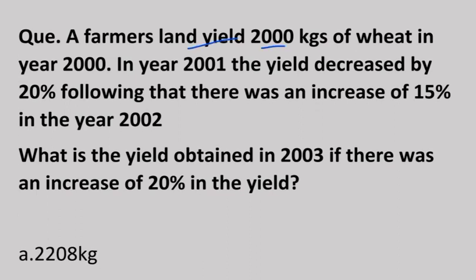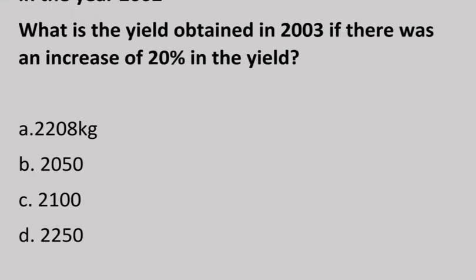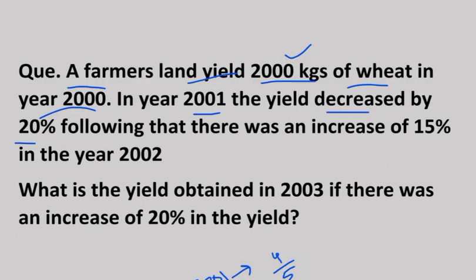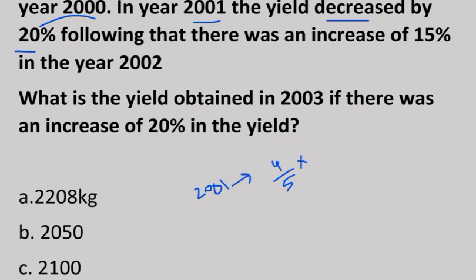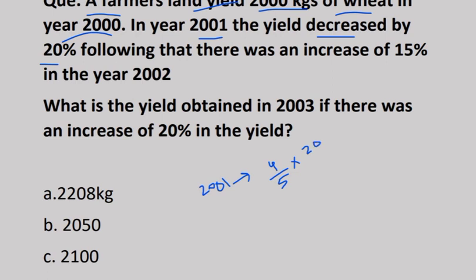Next question: a farmer's land yield was 2000 kg of wheat in year 2000. In year 2001, the yield decreased by 20%. So in 2001, the production decreased by 20%, meaning it's 80%, which is 4/5 times 2000. This equals 1600 kg.